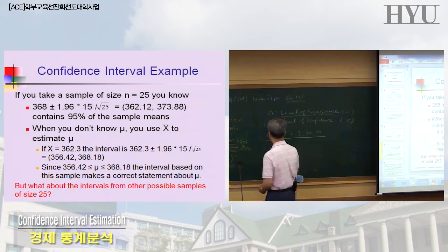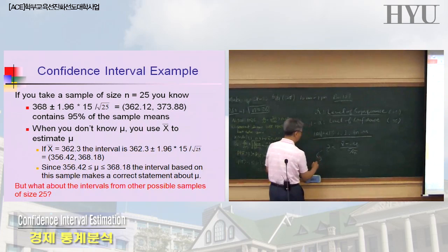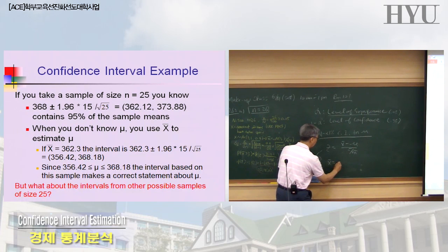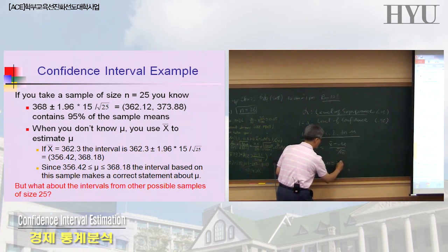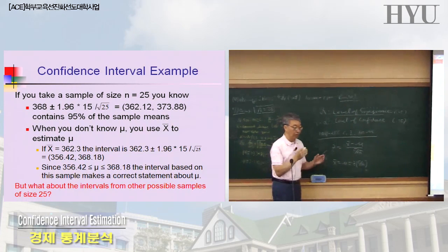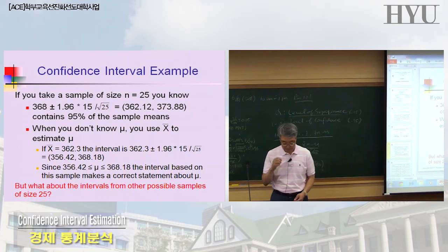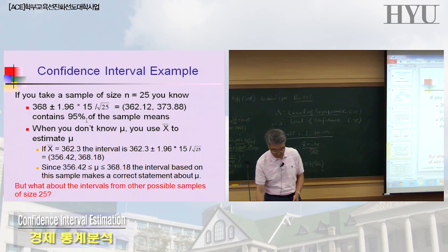The Z-score formula is: Z = (x-bar minus mu) over (sigma over square root of n). Since we know mu is 368, we rearranged this equation and found that x-bar equals mu plus or minus Z times sigma over square root of n. We found the lower limit was 362.12 and the upper limit was 373.88, containing 95% of the sample means.